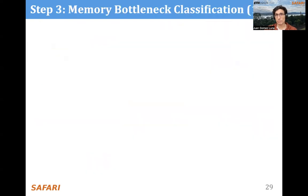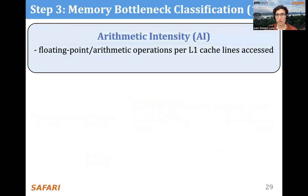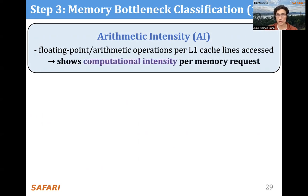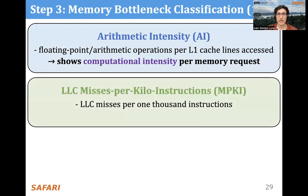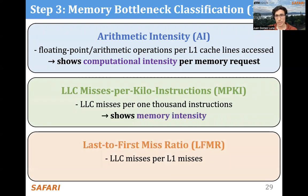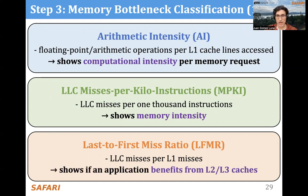In step three, we perform the memory bottleneck classification. We extract with our simulator relevant metrics such as arithmetic intensity — the floating point or arithmetic operations per L1 cache lines accessed — which shows computational intensity per memory request, and the LLC misses per kilo instructions (MPKI), which shows memory intensity. We also introduce a new metric called the last-to-first-miss ratio (LFMR), which gives us the ratio of LLC misses per L1 misses. This shows whether an application benefits from L2 and L3 caches, typical in host systems with a deep cache hierarchy.